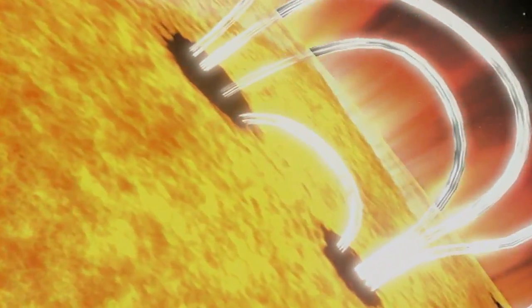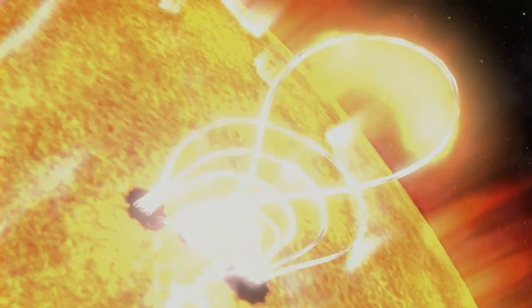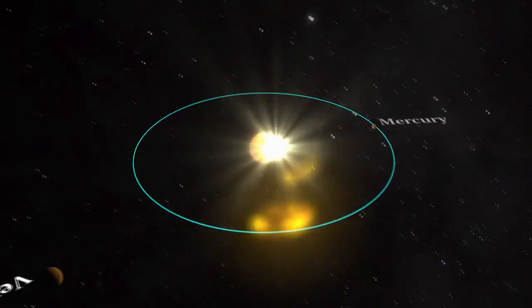The number of sunspots is important because sunspots are the visual markers of where powerful magnetic fields have emerged from the Sun's interior. These magnetic fields power solar flares and coronal mass ejections, which can affect Earth and other objects in the solar system.